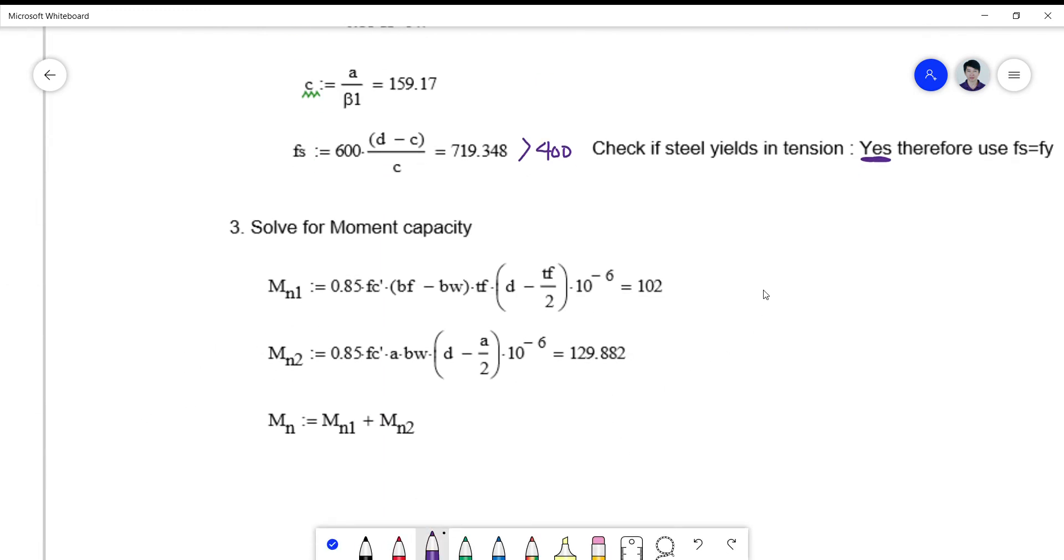This is greater than 400 megapascal, therefore steel yields in tension. You use fs is equal to fy as we have used it here, so we don't have any more problem because all the assumptions are consistent. So we solve for the moment capacity now. MN1 is simply the overhanging flange, this is now your AS2 times fy, this is your 0.85 f'c prime.